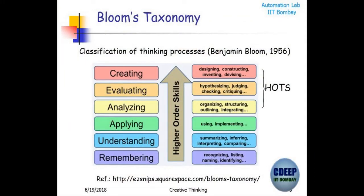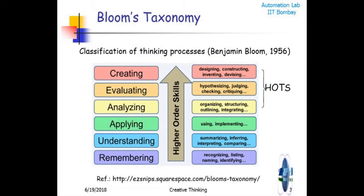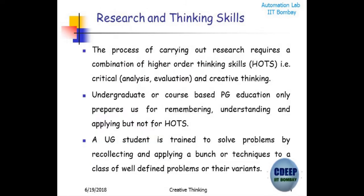I want to give examples of how the same thing can be viewed differently - simple examples that cut across disciplines. Learning multiple viewpoints and the role of multiple viewpoints in developing creative thinking - how you can encourage your students to develop creative thinking by exposing them to multiple viewpoints. The role that analogies play in developing creative thinking is also important. When you are doing undergraduate or postgraduate teaching, you are mostly dealing with the first three levels of Bloom's taxonomy. We rarely go to the levels of creating and evaluating. These higher levels are touched when you train a researcher. The process of carrying out research requires higher-order thinking skills - critical evaluation, critical thinking, and creative thinking.